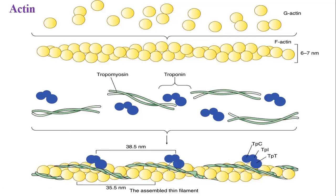Troponin is a complex of three peptide chains designated as TPC, TPI, and TPT. TPC is the calcium-binding subunit of troponin. TPI is the inhibitory subunit of troponin. TPT is the tropomyosin-binding subunit, through which troponin binds to tropomyosin. TPI is inhibitory and TPC is the calcium-binding subunit.